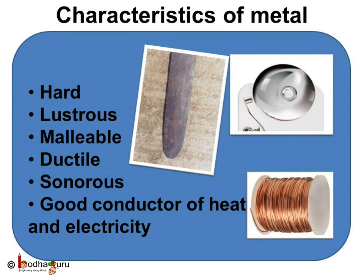So what are metals? If we talk about their physical properties, we can say metals are hard. They are lustrous, meaning they have a shine. They are malleable, which means they can be beaten into thin sheets. They are ductile, which means they can be drawn into thin wires. Metals produce a ringing sound, hence they are said to be sonorous. Generally, metals are good conductors of heat and electricity.